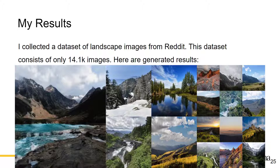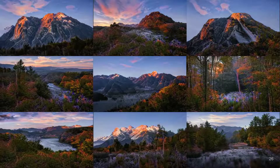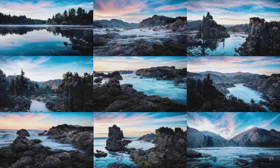On the left you can see what the original training looked like, and on the right, what the adaptive augmentation has done — even on small data sets, you're still getting very good image results. I collected my own data set of landscape images from Reddit, consisting of only 14,100 images. Here are some generated results after using adaptive discriminator augmentation on this dataset. You can also adjust different structures and styles — having the same structure with different styles, or vice versa — results that would not be viable on such a small data set without adaptive discriminator augmentation.